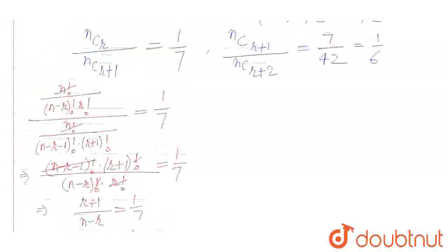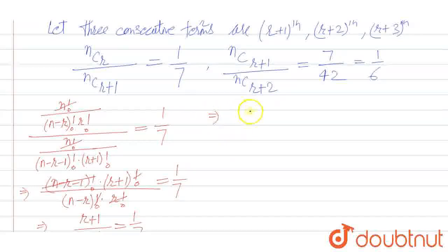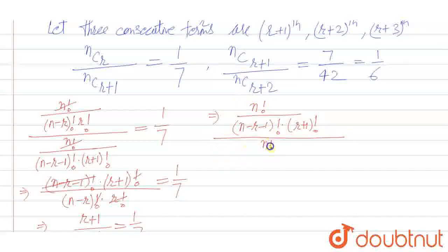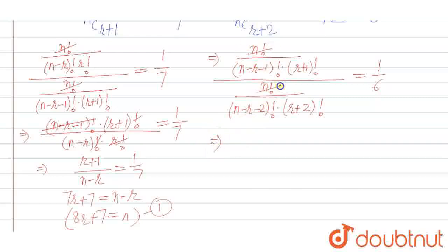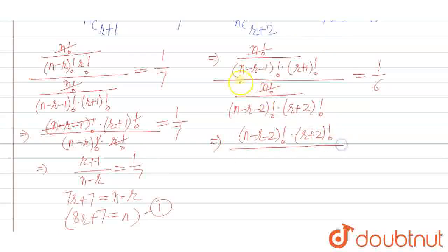Now solving the second ratio: n! divided by (n−r−1)! times (r+1)! over n! divided by (n−r−2)! times (r+2)! equals 1/6. Simplifying, this becomes (n−r−2)! times (r+2)! divided by (n−r−1)! times (r+1)!, which equals 1/6.